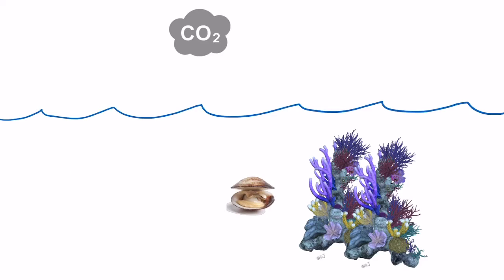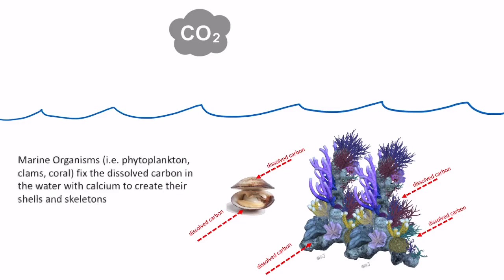Once we have this carbon diffusing from the atmosphere into the surface ocean, it dissolves into the ocean. And then that dissolved carbon is used by marine organisms such as clams and corals. They fix that carbon and mix it with calcium to create their shells and skeletons.